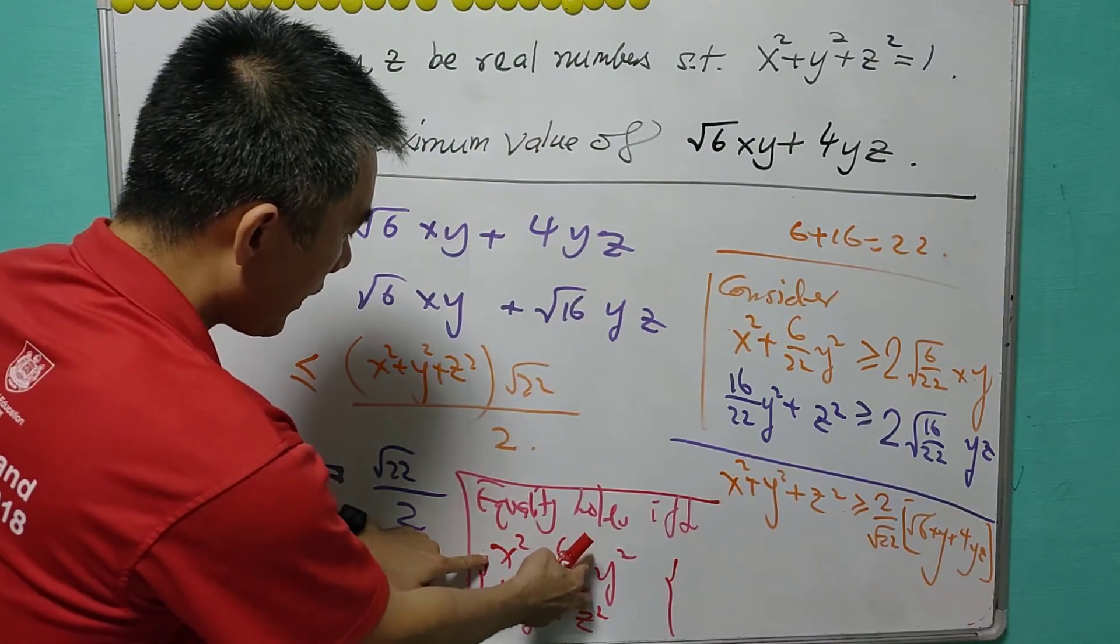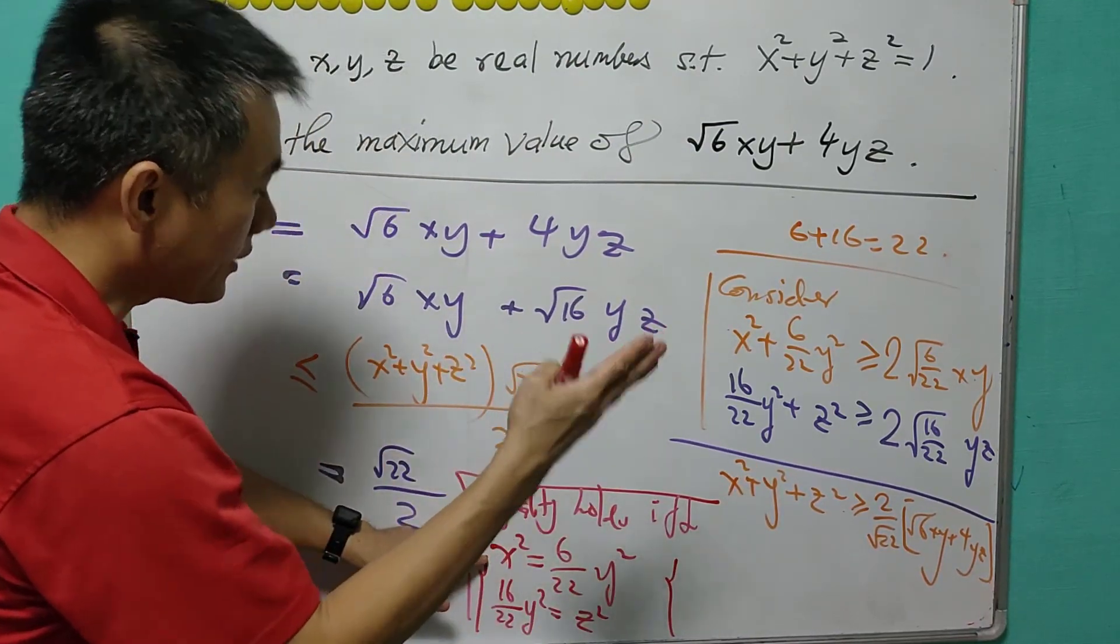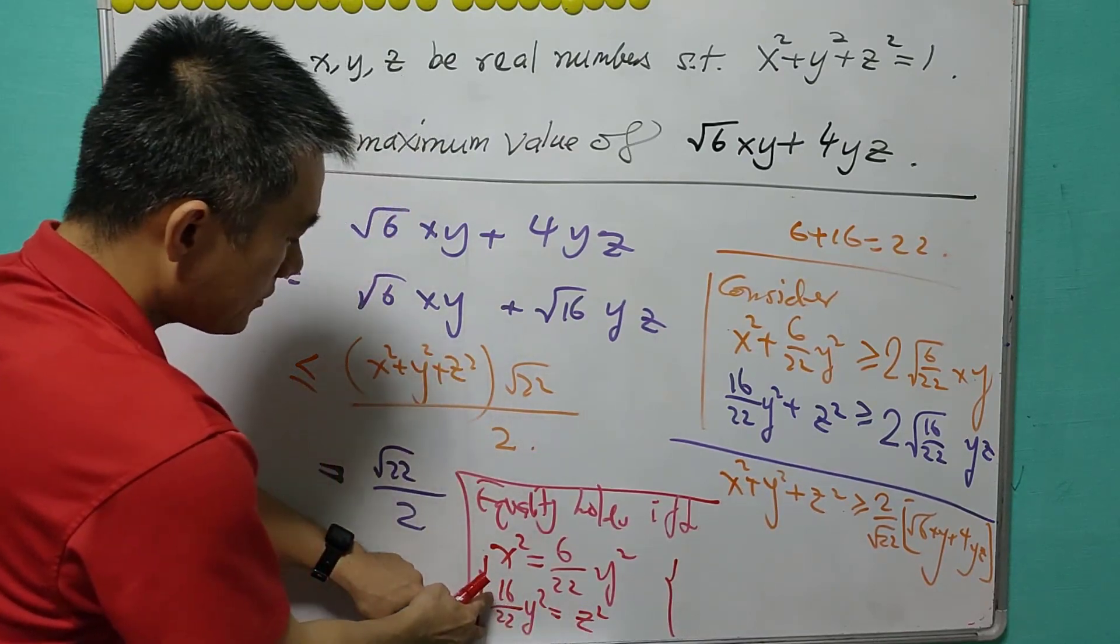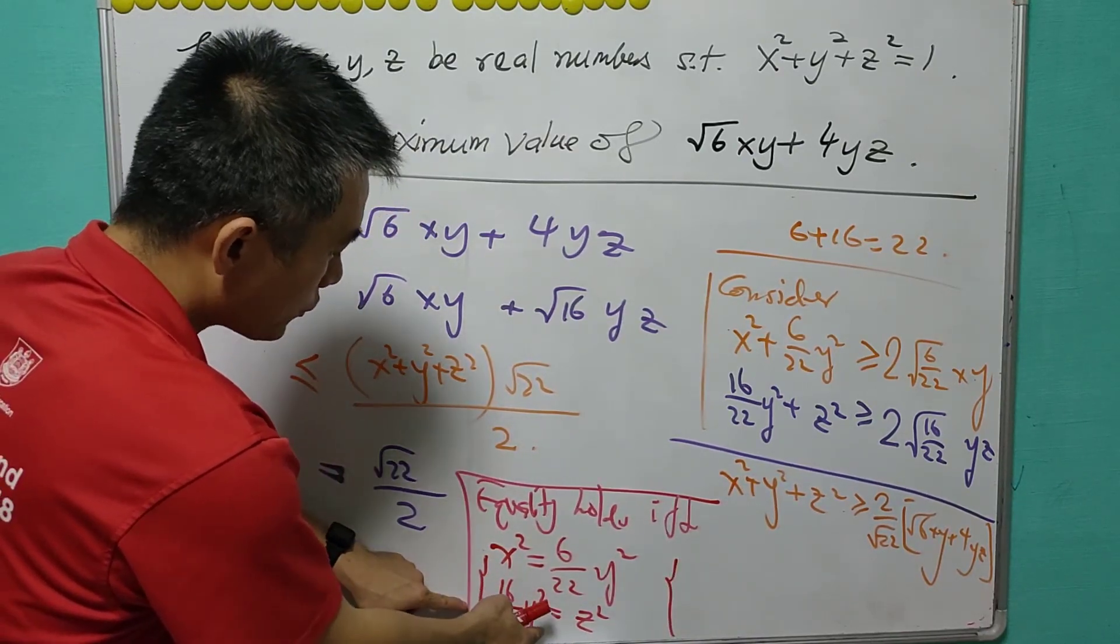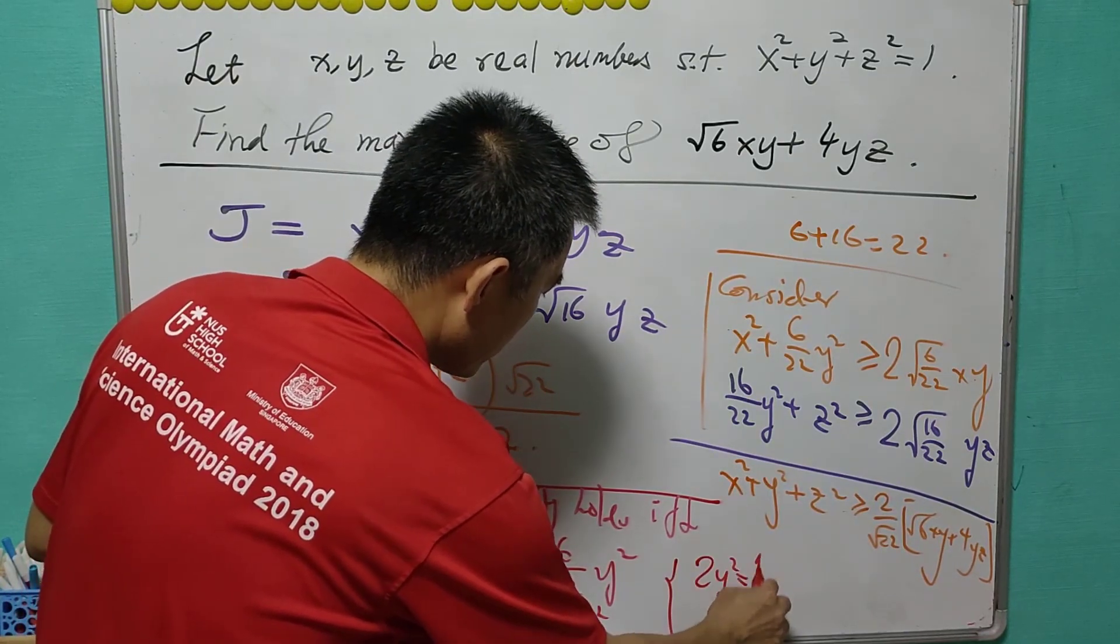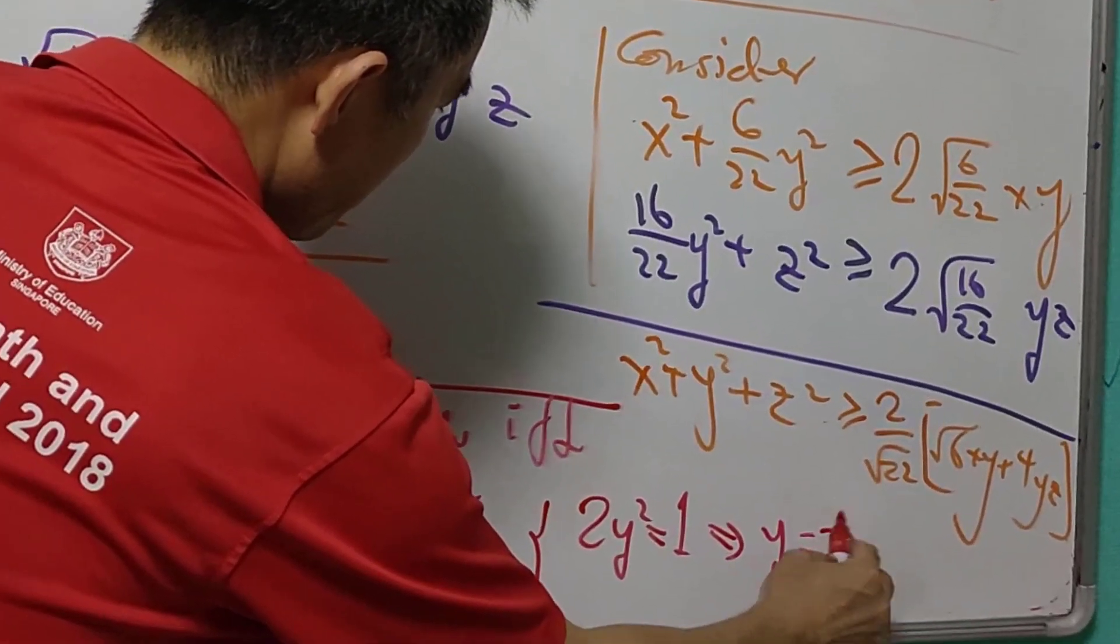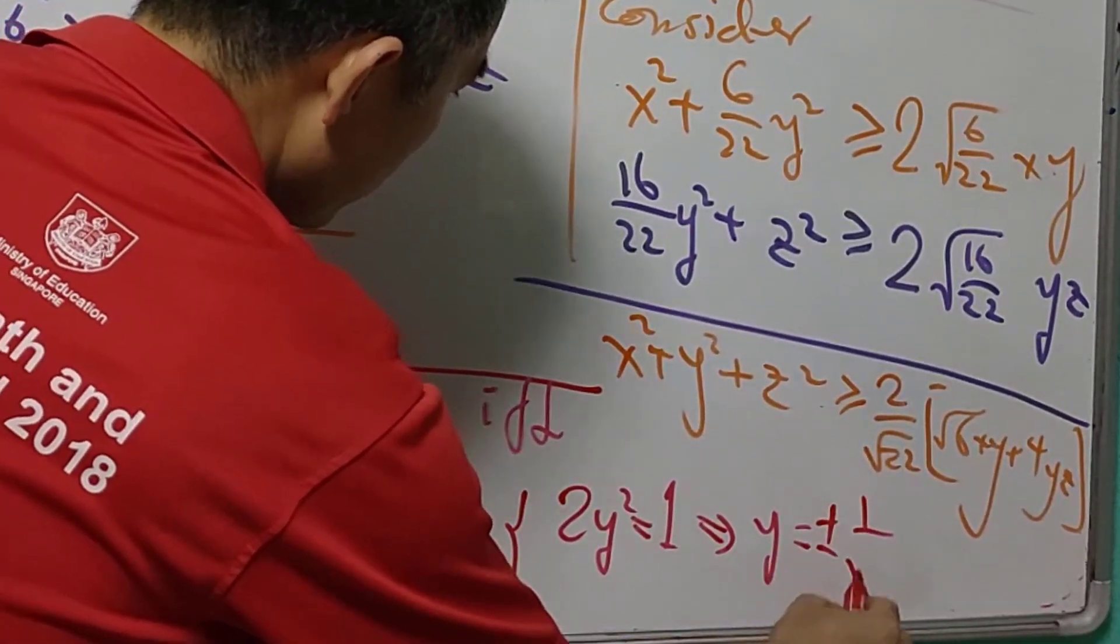So x² we write as (6/22)y², y² as y², z² as (16/22)y². So the sum of this will be 2y² = 1. And therefore y can be ±1/√2.